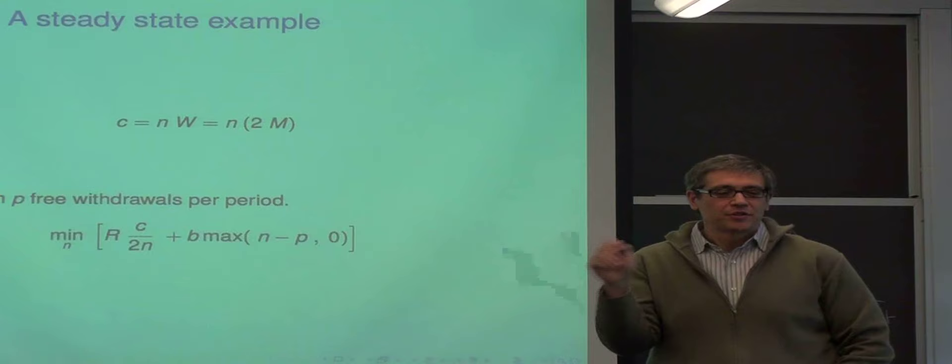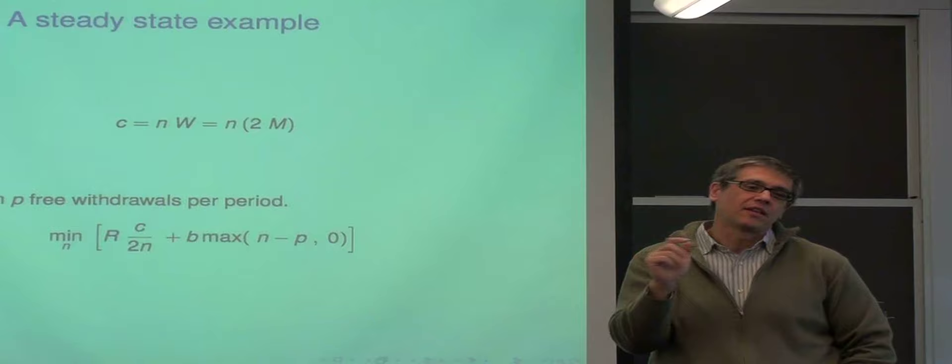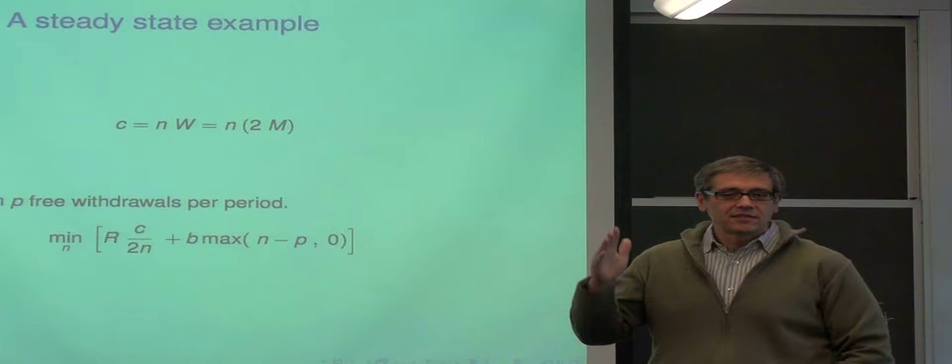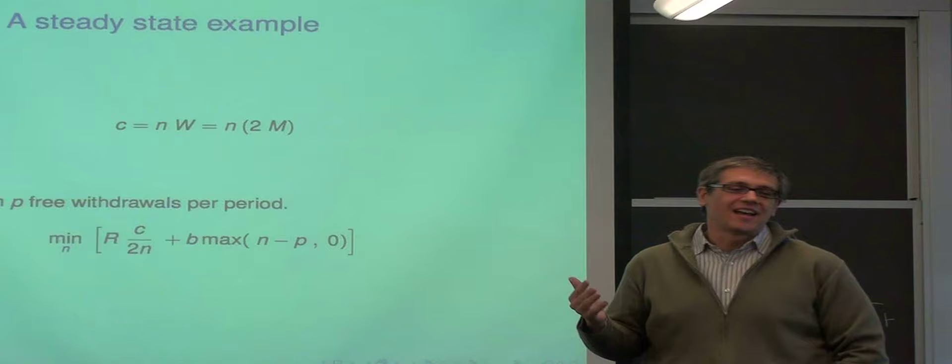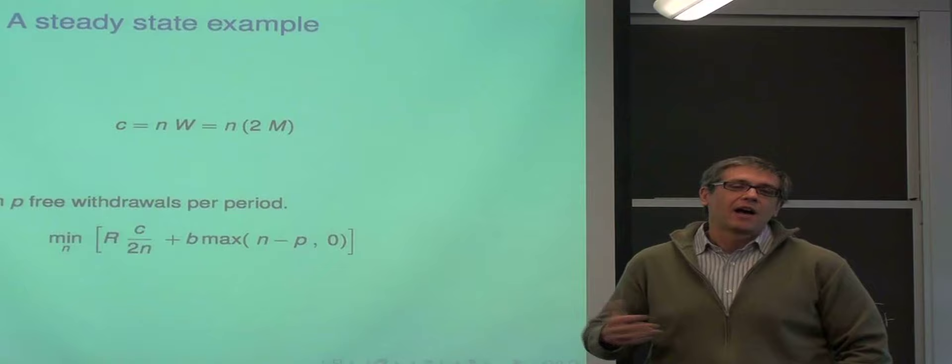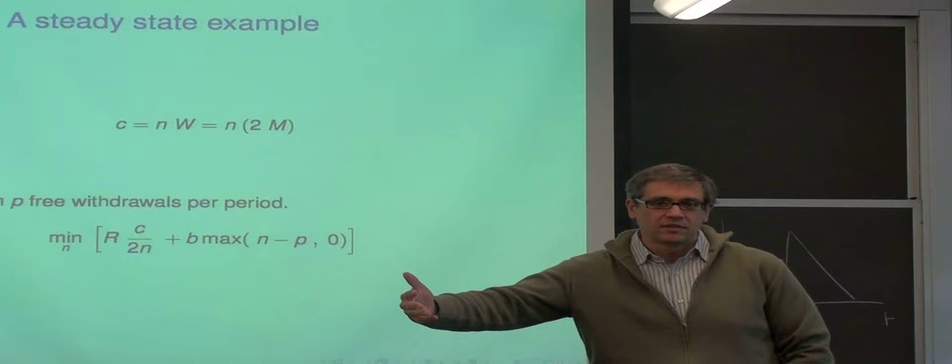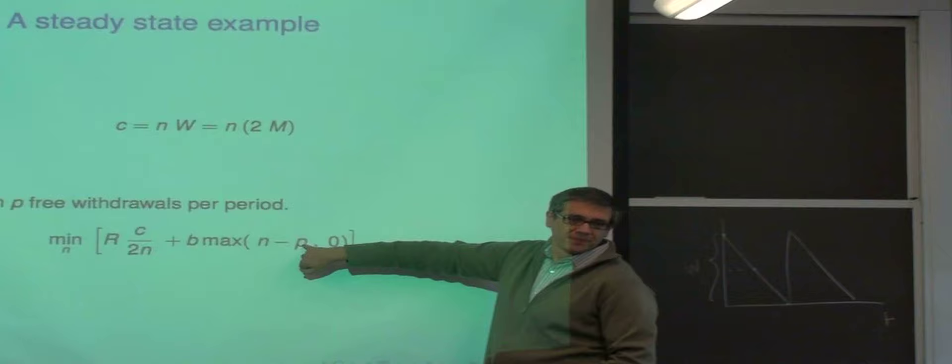So pretend that it says B times N. This is really Baumol-Tobin. So imagine that the bank, instead of charging you B, it says look, the first time, the first five times that you withdraw money, it's free. And starting with the sixth, we charge you B. Really what we have in mind is that you go through your life, and then the main cost is the opportunity cost of time. And when there are more ATMs and stuff, then you will pass by through the ATMs more often. So these are free withdrawals, but there is a limit to that. So there is this new parameter P. Except for that, this is kind of Baumol-Tobin.